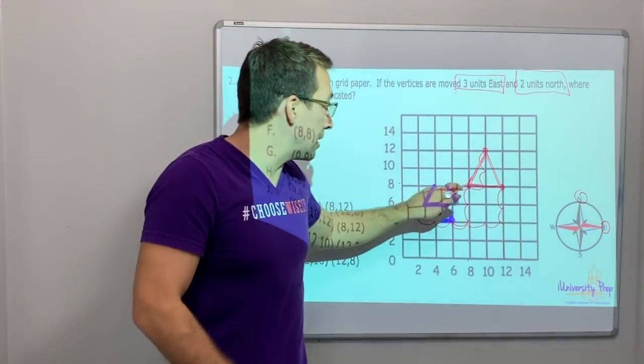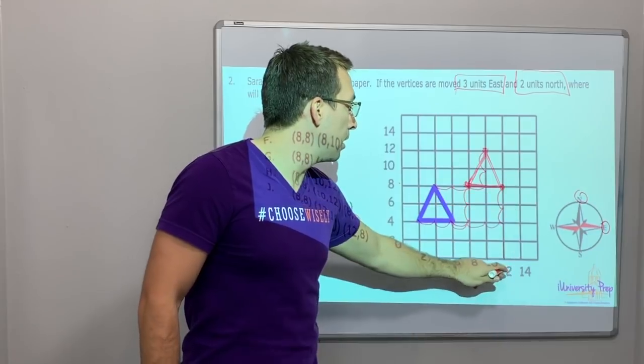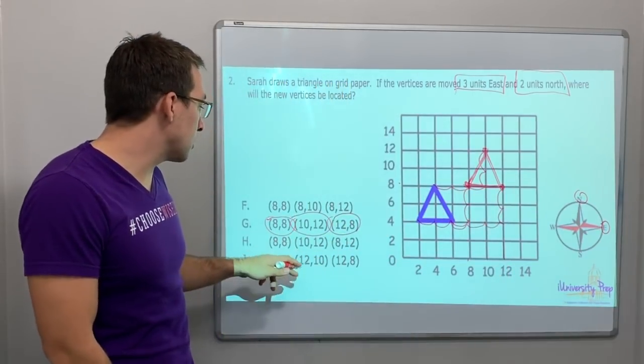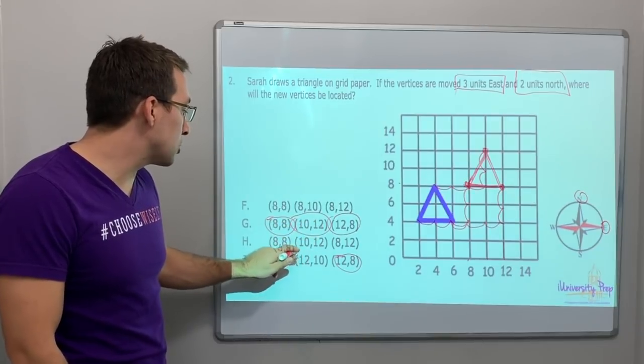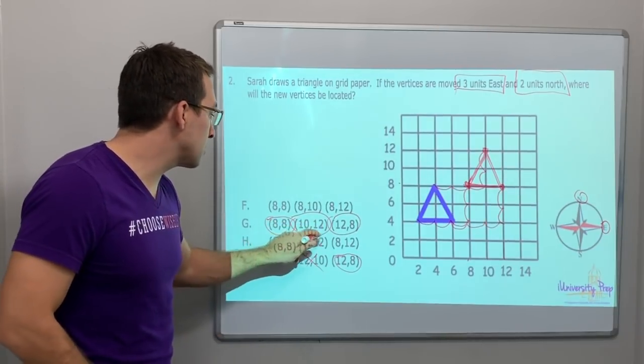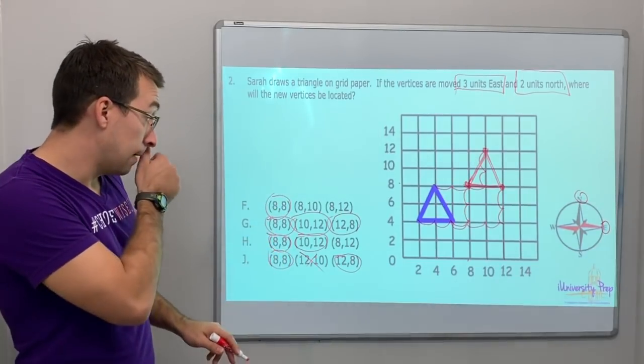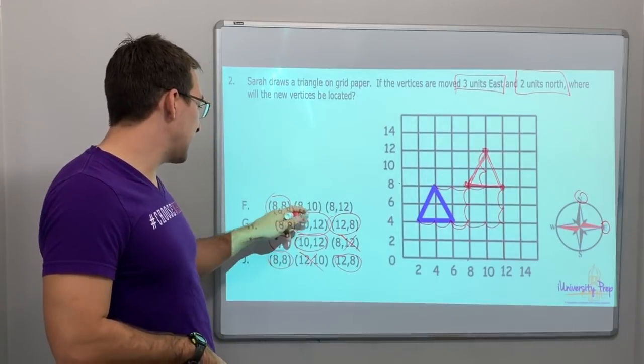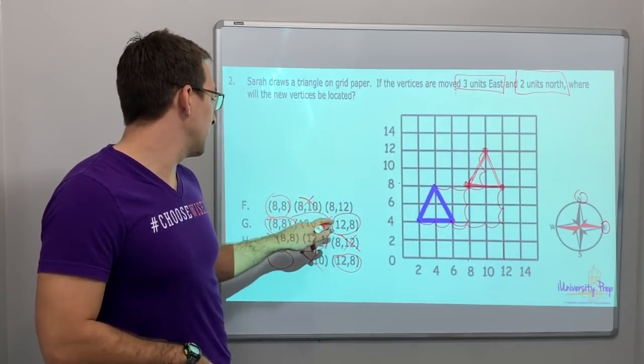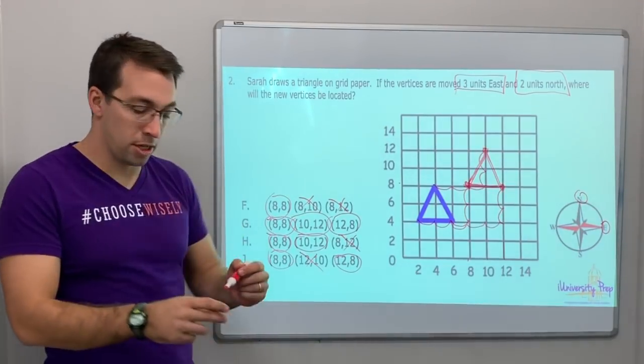There you go. That's what I would have done. That is how I did it. I would find the points and then I would pick a point and I'd see what it is and then I would circle it. Look, this is twelve, eight. This is ten, twelve versus twelve, ten. That's wrong. Ten, twelve is correct. Eight, eight. So that one is wrong. And eight, ten, eight, twelve is wrong. There you go. G is our answer.